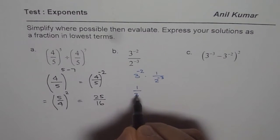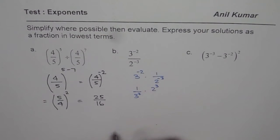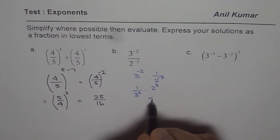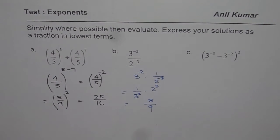This becomes 1 over 3 squared, and here it becomes 2 cubed. 2 cubed is 8, so we could write this as 8 over 9, since 3 squared is 9. That's how you can simplify it.